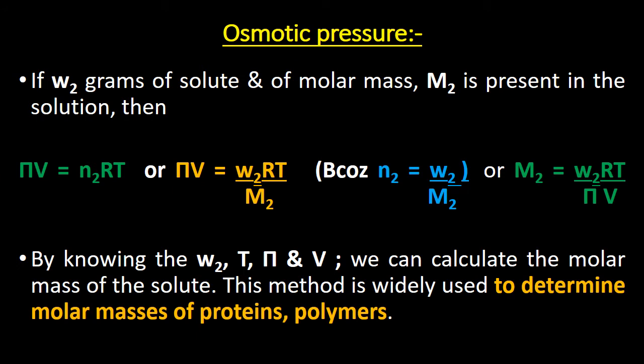If W₂ grams of solute of molar mass M₂ is present in the solution, then πV = N₂RT, or πV = W₂RT/M₂, because N₂ = W₂/M₂ — where N₂ is the number of moles of solute, W₂ is the mass of the solute, and M₂ is the molar mass of the solute. Therefore, M₂ can be calculated by the expression M₂ = W₂RT / (π × V).